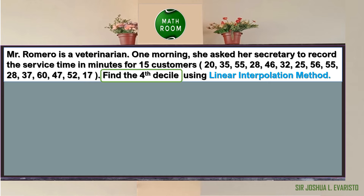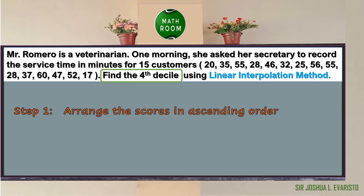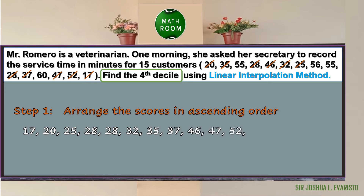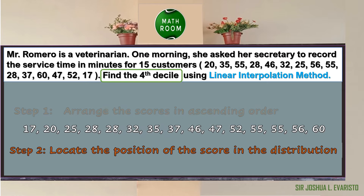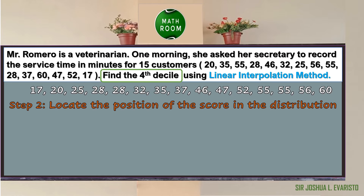For the solution, the first step is to arrange the scores in ascending order: 17, 20, 25, 28, 28, 32, 35, 37, 46, 47, 52, 55, 55, 56, and 60. The second step is to locate the position of the score in the distribution. Let us compute D sub 4 using the formula D sub k = k(n+1)/10.